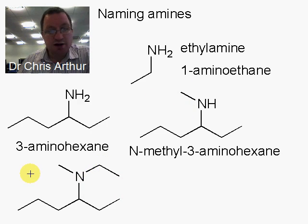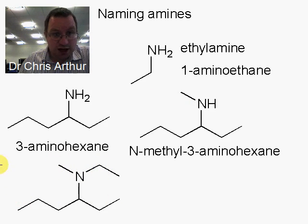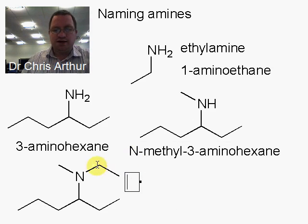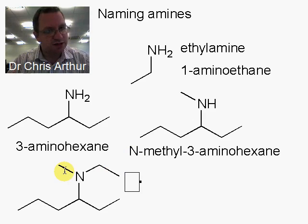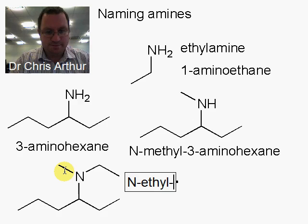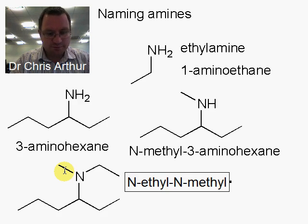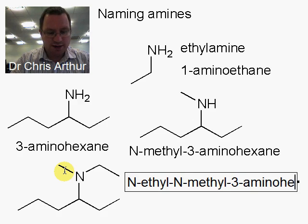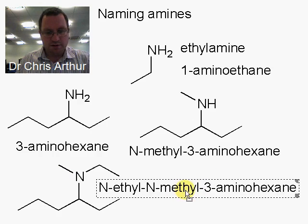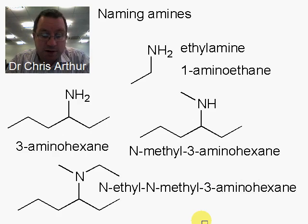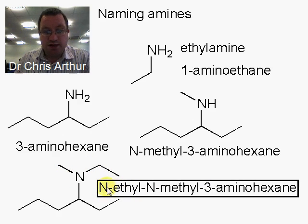Now let's take that secondary amine and make it into a tertiary amine, so we now have three things attached to the nitrogen: a methyl group, an ethyl group, and the long hexane chain. We're going to use this N-type notation again. We have an ethyl group and a methyl group — and you know the rule, you always order alphabetically. So we say N-ethyl, N-methyl, 3-aminohexane. What are we attaching to the nitrogen? An ethyl group, a methyl group, and that is attached to this hexane chain where the amine is on the third carbon.